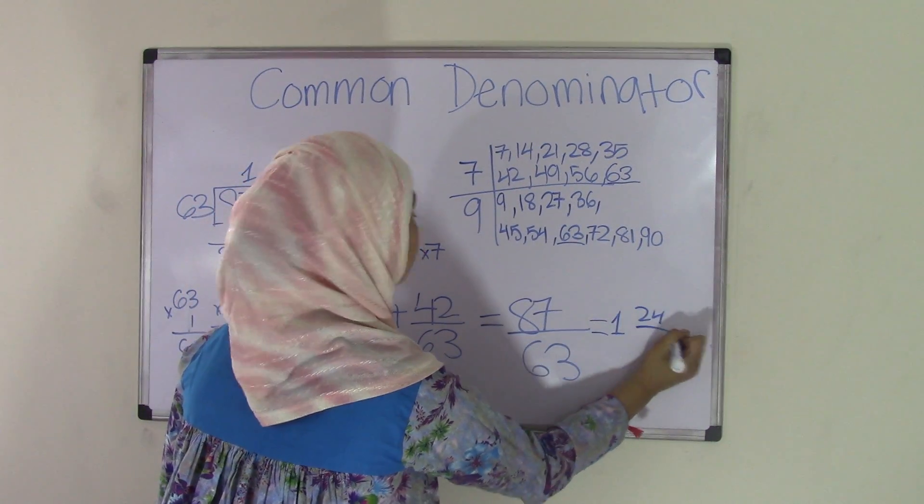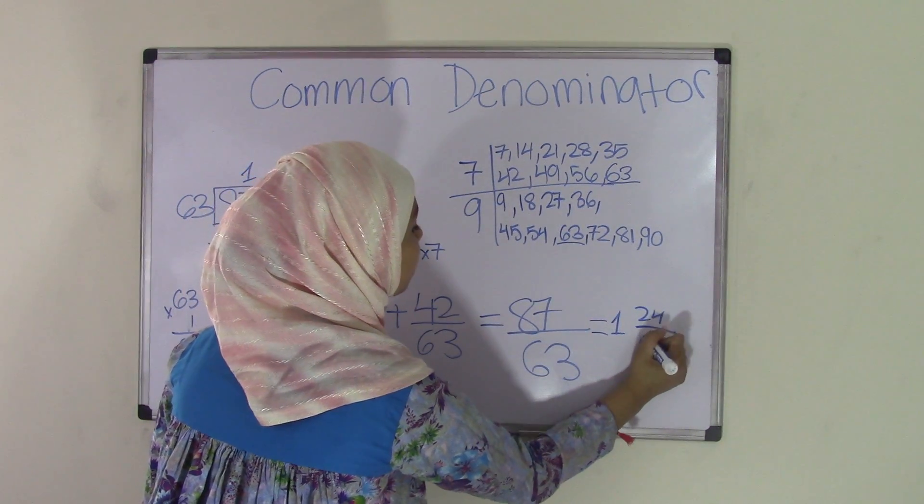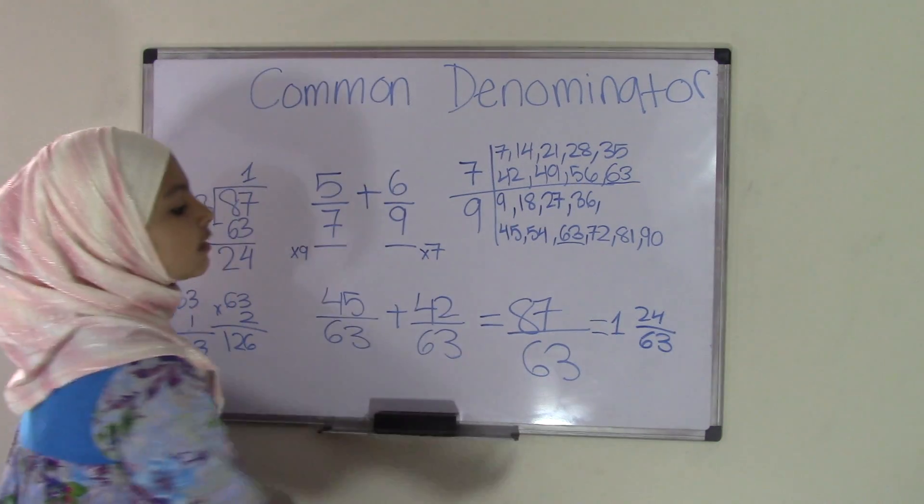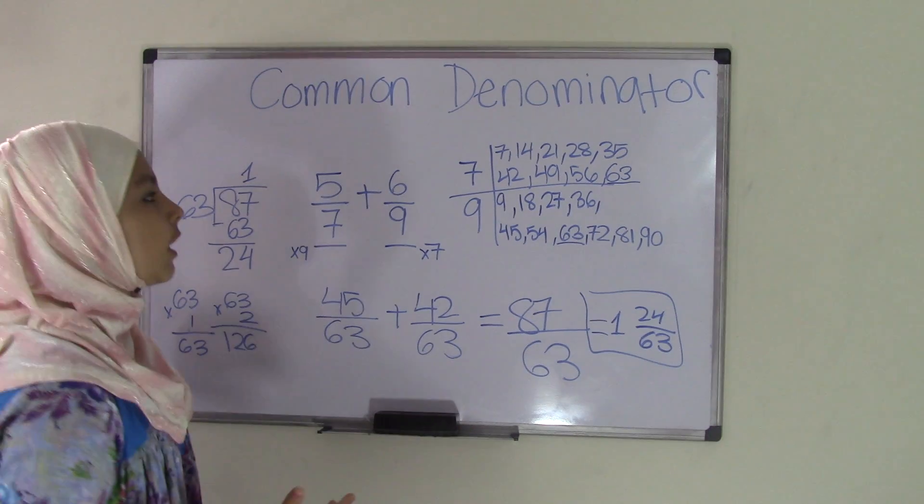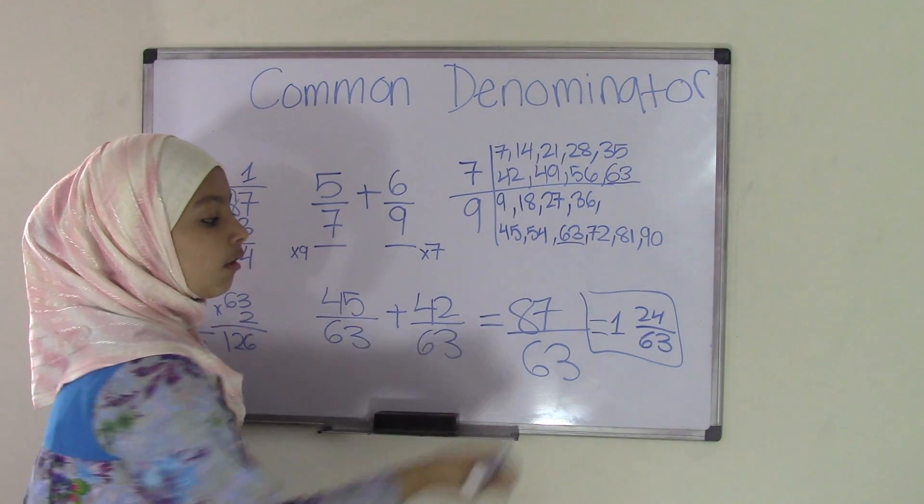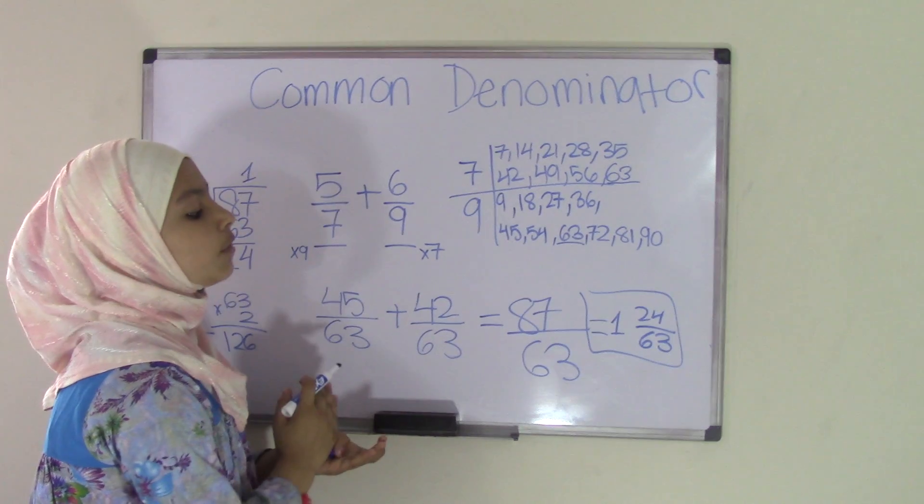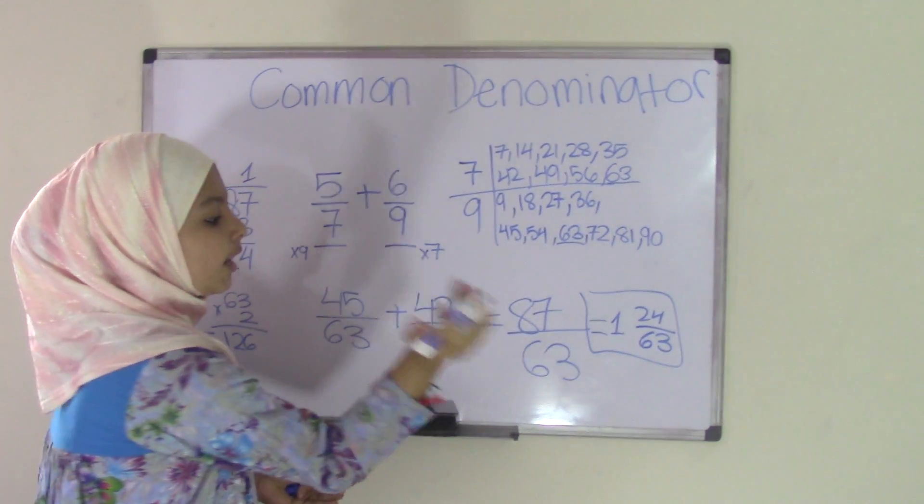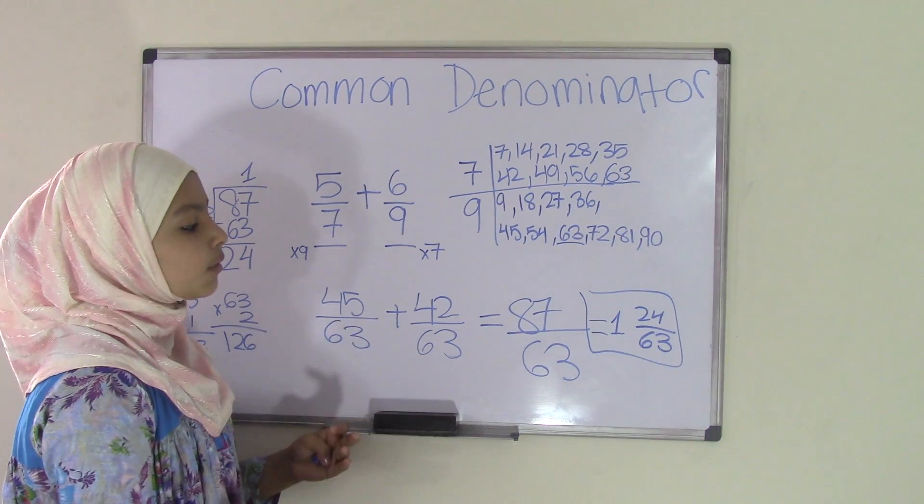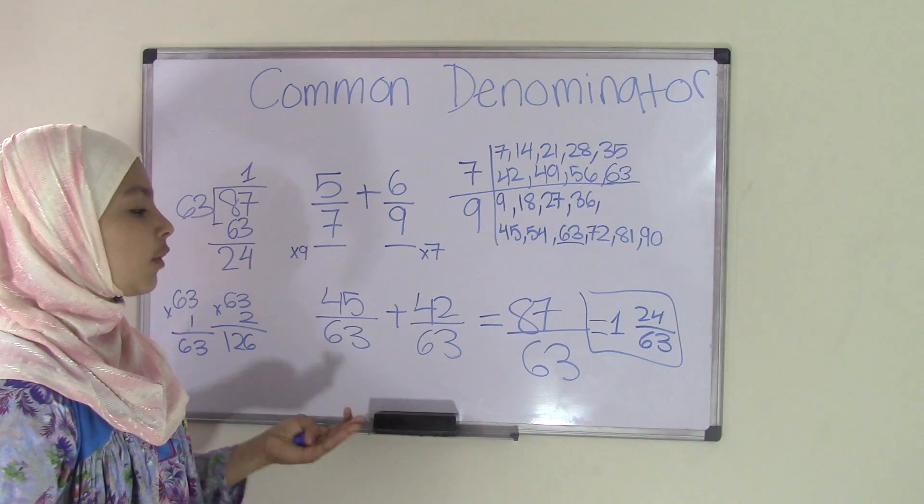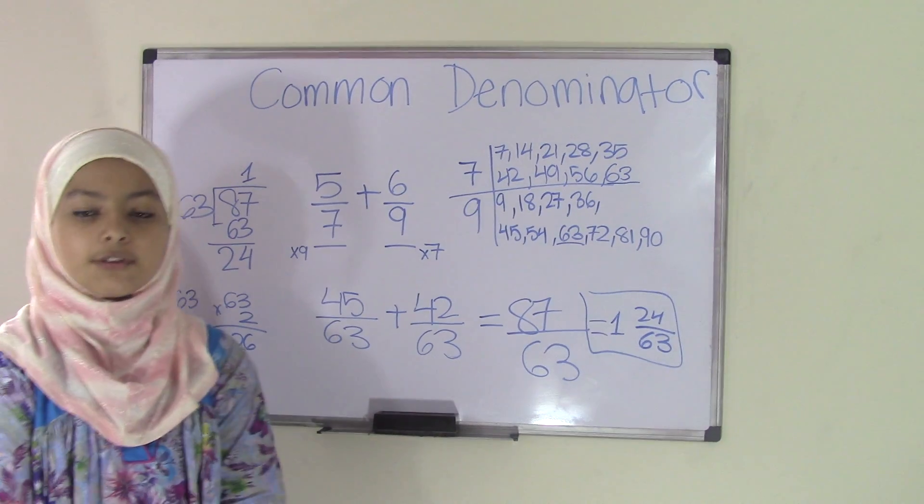So that means the mixed number value of 87/63 equals 1 and 24/63. That's our final answer. Now, I hope you guys understood this topic. Remember, we're going to have more topic videos on how to convert improper fractions to mixed numbers, so it's okay if you didn't understand that yet, because we're going to explain it thoroughly in the next videos. We hope you keep on watching and we'll see you guys next time.